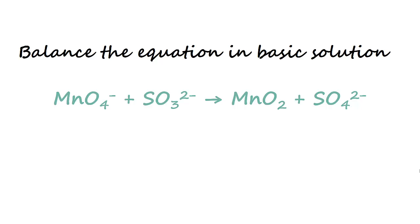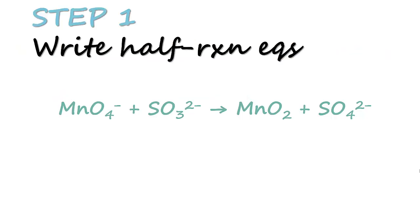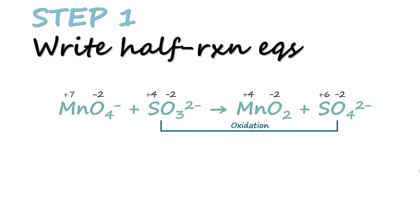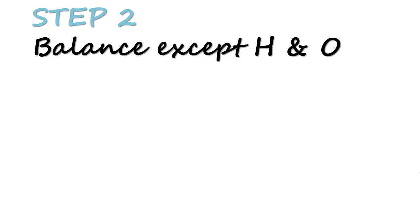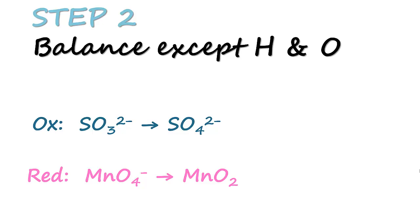So let's proceed to balancing the equation in basic solution. This is the given equation. The first step is to write out the half reaction equations, and to do so we need to identify which one undergoes oxidation and which one undergoes reduction by figuring out the oxidation number. SO₃²⁻ to SO₄²⁻ is an oxidation, whereas MnO₄⁻ to MnO₂ is a reduction. These are our two half reaction equations. Next we proceed to step two, balancing all elements except hydrogen and oxygen. Since sulfur and manganese are already balanced in both equations, we proceed to step three.